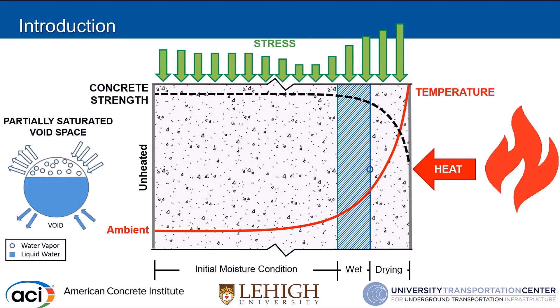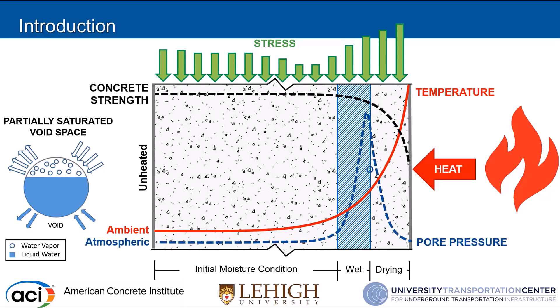Looking at that same permeable void space, we're in an area where water vapor from the drying section is collecting at temperatures that allow condensation, so we start to fill those voids. With the difference in permeability for gas versus liquid water, we end up generating pressure. From the experimental record, we see a pressure peak that occurs typically at the boundary between the wet and drying regions. With the right thermal gradient, right reduction in strength, and right pore pressure development, a spalling condition develops at the right depth and time.